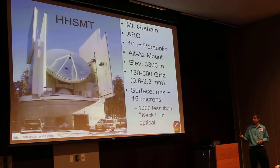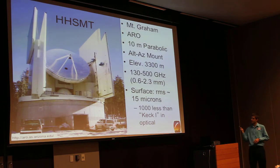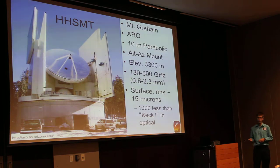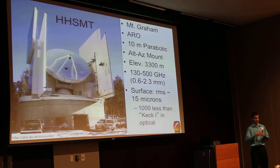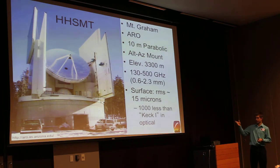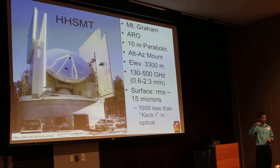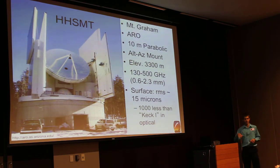We took our data with the Heinrich Hertz submillimeter telescope on Mount Graham, at an elevation of 3,300 meters, or about 10,000 feet. This is important because water vapor in the Earth's atmosphere absorbs light with a wavelength near one millimeter. So if you want to do submillimeter astronomy, you either put your telescope in space, or on a high enough mountain peak that's relatively dry and the water vapor is negligible.